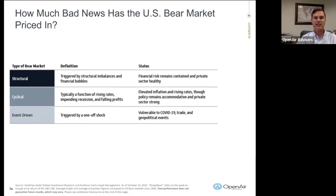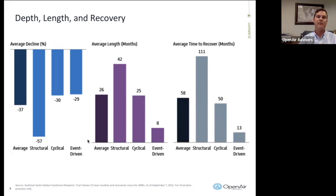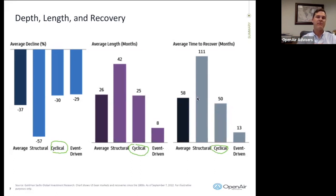The average decline in a cyclical bear market is about 30% — closer to the bottom we talked about. The average length is about 25 months. Some are longer, some are shorter. The start to this was January of this year, so if we're looking at two years, we'd be looking at the end of 2023. The average time to recover is about 50 months. But how much is already priced in? We've already gotten to a 25% decline. If the average is 30, we may have already hit the bottom. To be determined — I don't have a crystal ball.